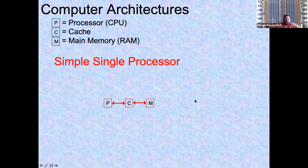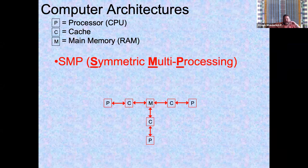The basic ideas students already know include single processor cache memory processing. Symmetric multiprocessing, also called shared memory, has at least one cache between each processor, and most importantly, a shared memory. Cache coherency problems, of course, have to be worked out when everybody is sharing one piece of memory.